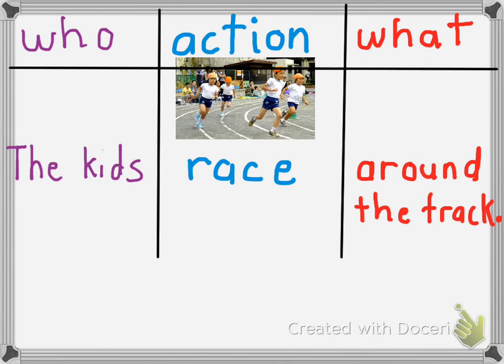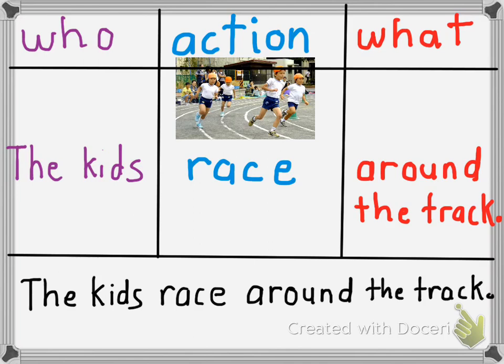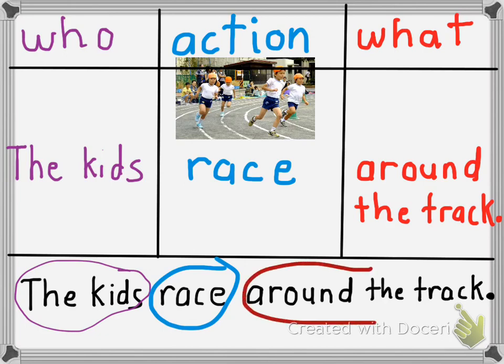So let's rewrite this sentence and see how it looks. So it looks like the kids race around the track. We use the three parts, the who, which is the kids, the action, the race. And what are they racing around? Around the track. Great job.